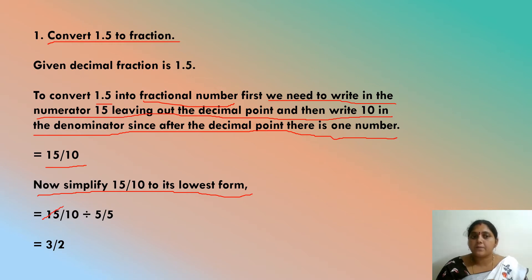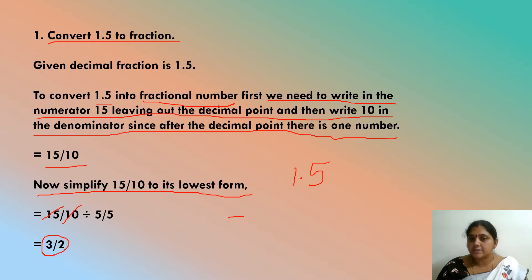5 times 3 is 15, and 5 times 2 is 10. So our lowest term is 3/2. To recap: for 1.5, write 15 together as the numerator — don't write any point between the digits.